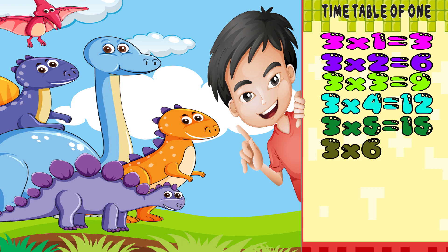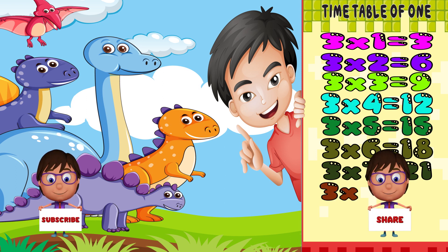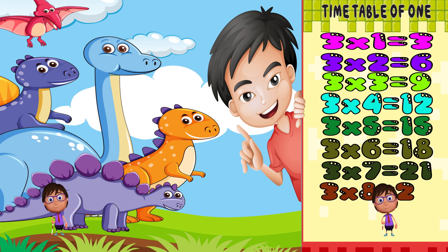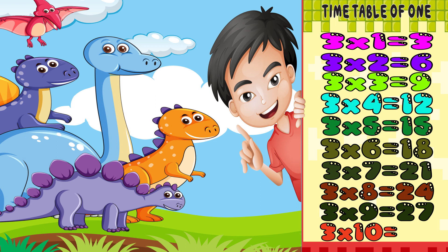3 times 6 is equal to 18. 3 times 7 is equal to 21. 3 times 8 is equal to 24. 3 times 9 is equal to 27. 3 times 10 is equal to 30.